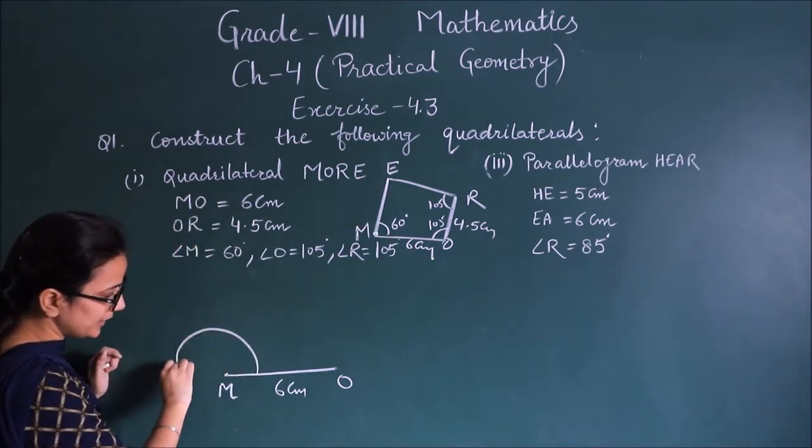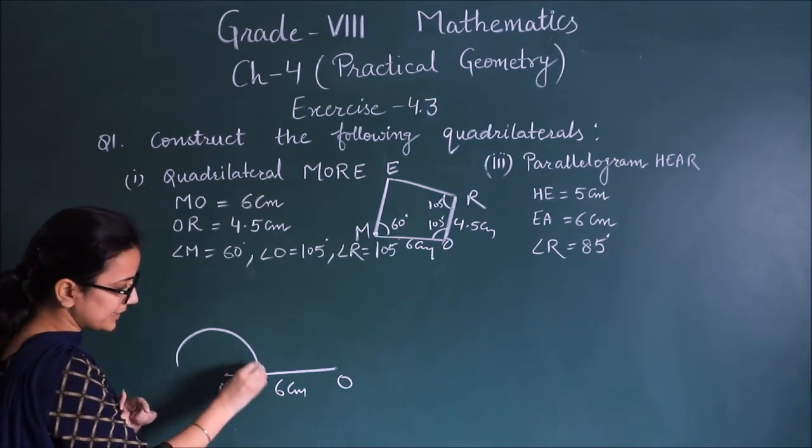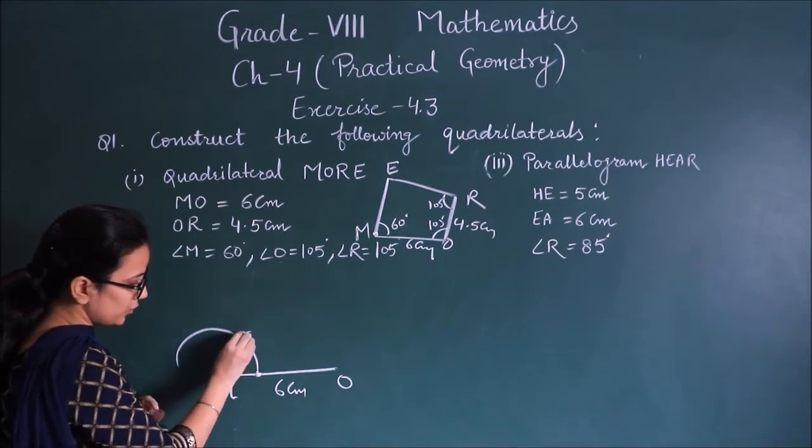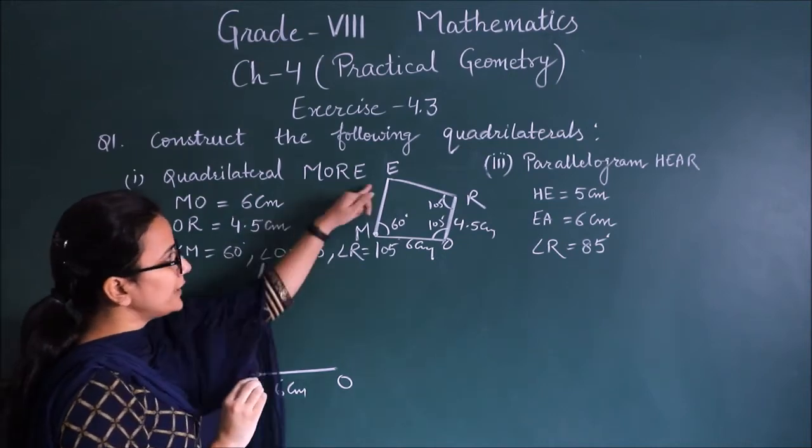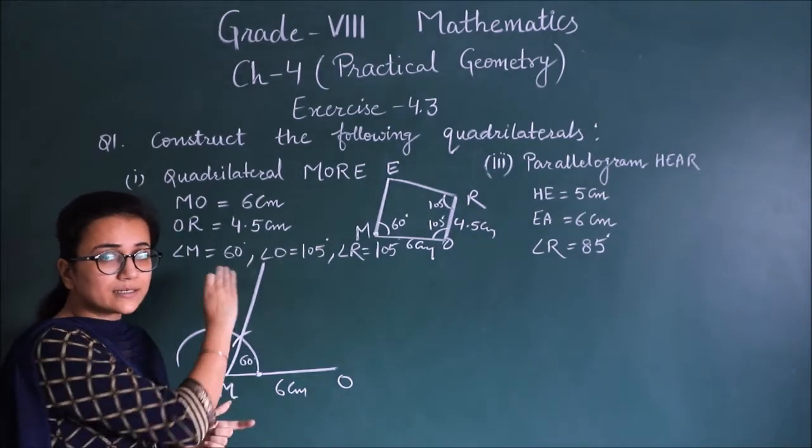Compass open and take the radius and take the same arc, same radius and take the same arc, this point. So you have to make this angle of 60 degrees. Now I don't know this, I don't know where this point is. We will see where we intersect this line.